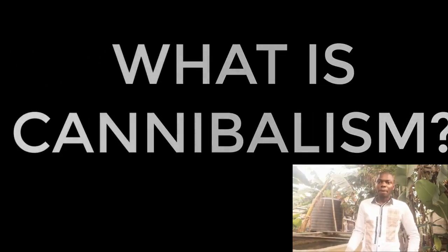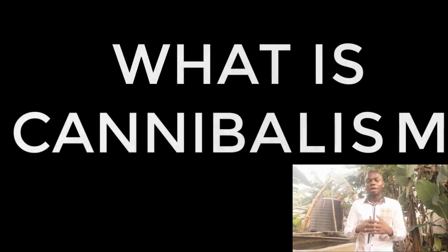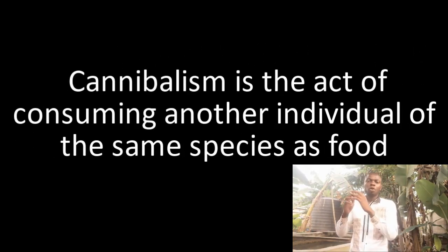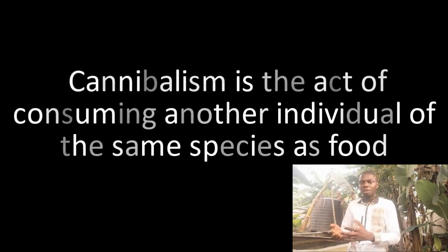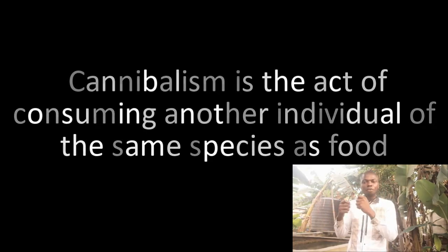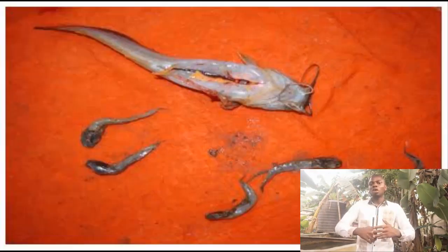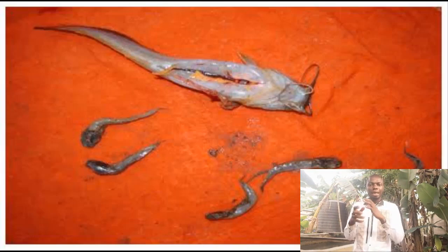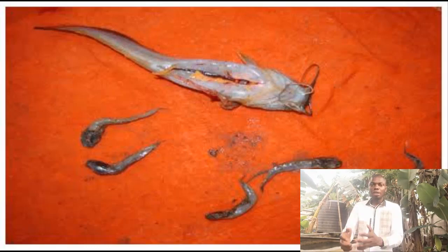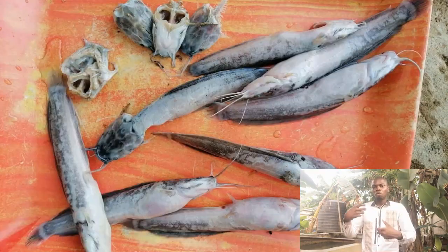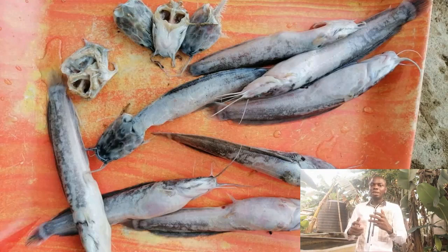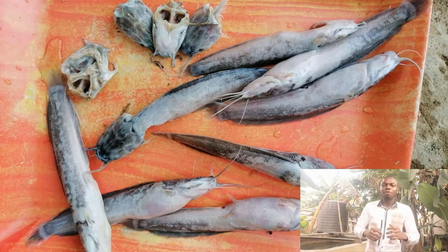Cannibalism is the act whereby some animals — in this case fishes — eat or consume another as food. A lot of persons have experienced this in their farm; it's a regular occurrence for fish farmers. Most times you will come and see wounds all over the body of some of your fishes, or you just see the heads of fishes in your pond — that's a result of cannibalism.